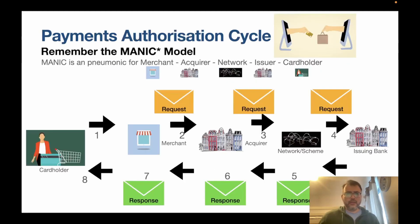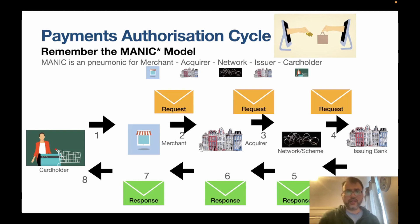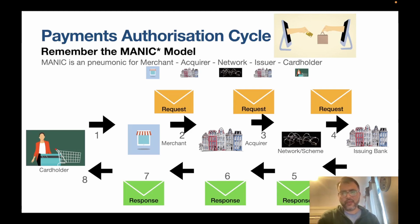This slide illustrates the payments authorization cycle. If you haven't seen the first video in the cards and payments series on the manic model, please watch that first. It covers the different entities: merchant, acquirer, network, issuer, and cardholder. In this model, the cardholder is on the far left and the issuing bank is on the far right.